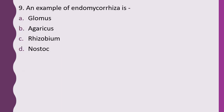Question 9. An example of endomycorrhizae is: Glomus, Agaricus, Rhizobium, or Nostoc. The correct answer is option A, Glomus.